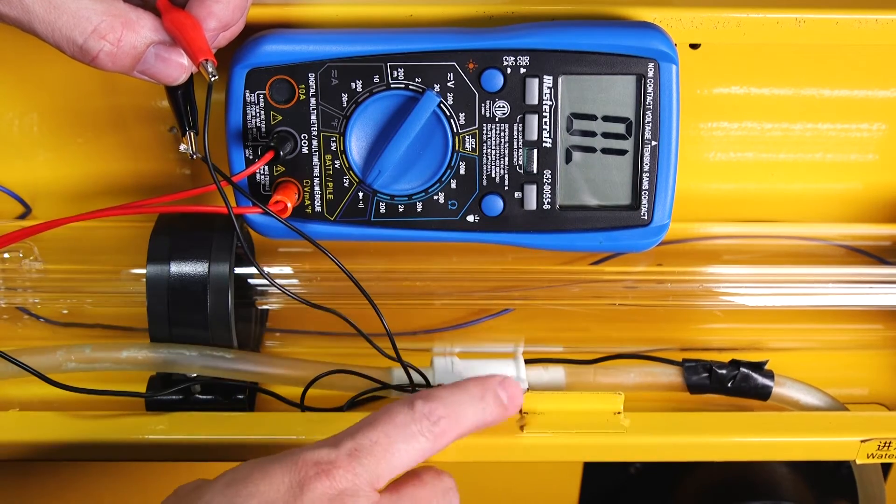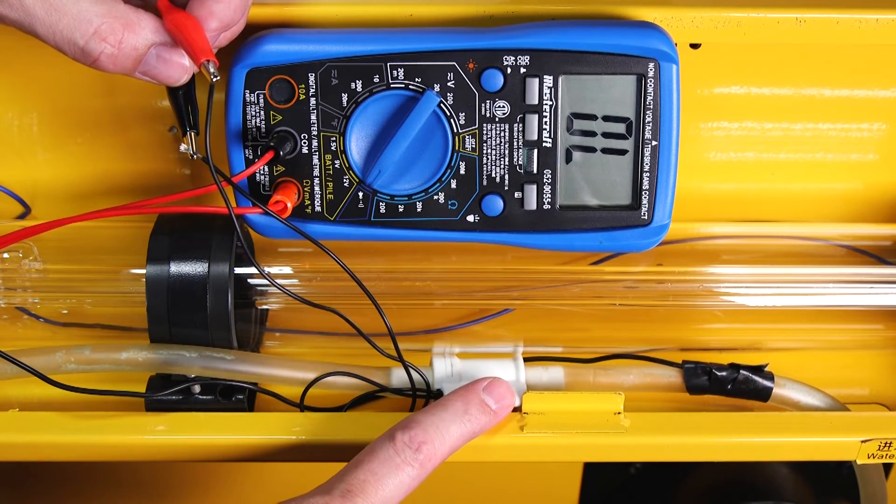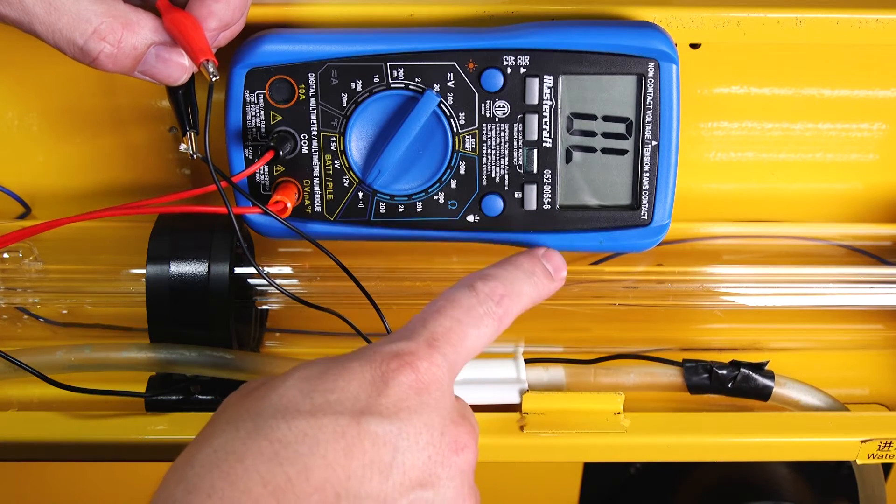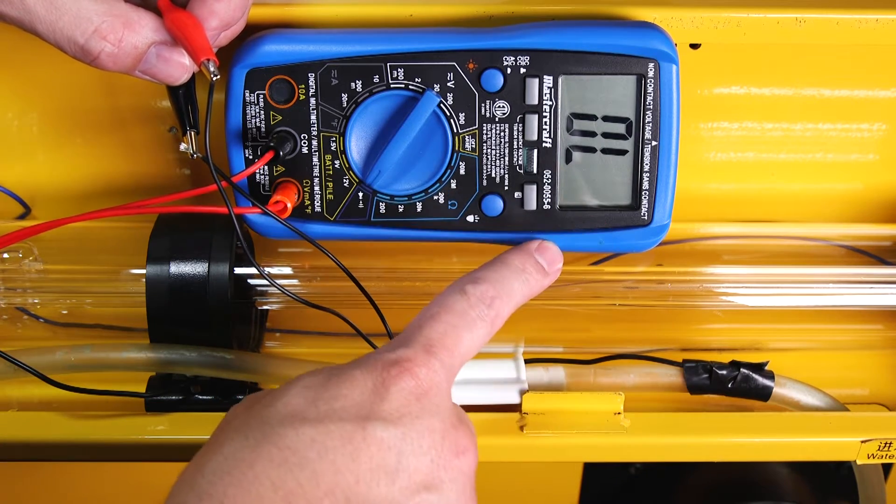If your multimeter beeps, it means your water flow switch is okay. If it doesn't beep but you can see water flowing through the lines, it means your water flow switch has failed.